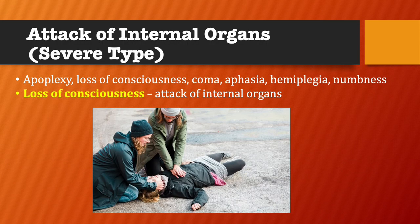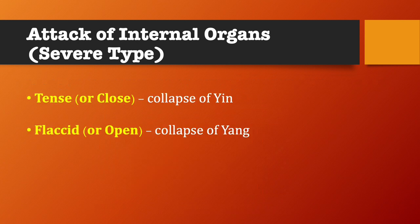Attack of the internal organs and channels by wind is characterized by apoplexy, loss of consciousness, possibly coma, aphasia, hemiplegia, and numbness. The loss of consciousness indicates attack of the internal organs. There are two types of patterns: one called tense or close, corresponding to collapse of yin, and the other called flaccid or open, corresponding to collapse of yang.